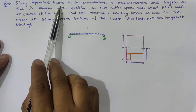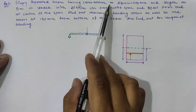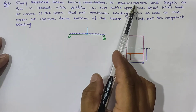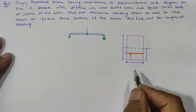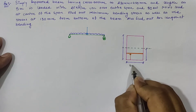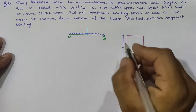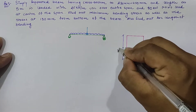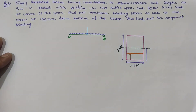Given that a simply supported beam has a cross section of 230 by 450 mm. This means our rectangular cross section has width B equal to 230 mm and depth D equal to 450 mm.